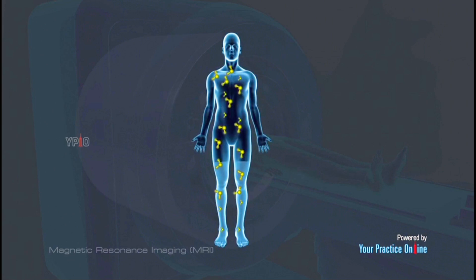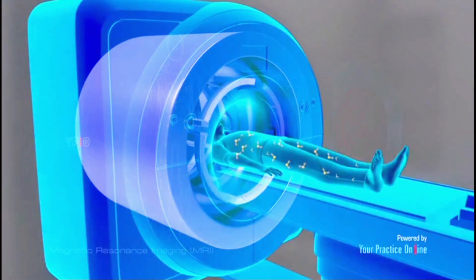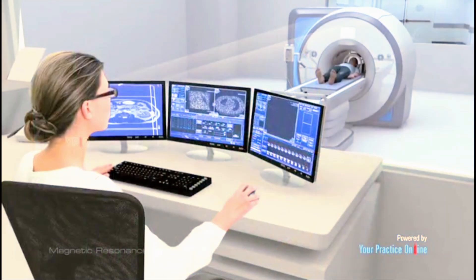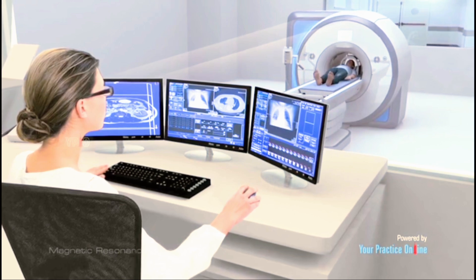Protons in the water molecules of your body respond to the magnetic field and radio waves by realigning themselves. They generate signals which are picked up by a detector and processed to create the images.